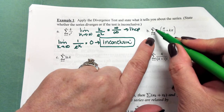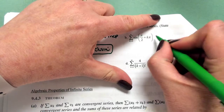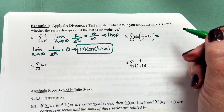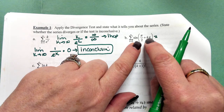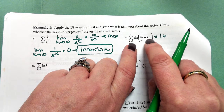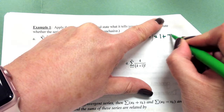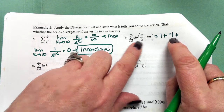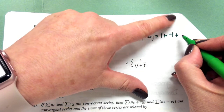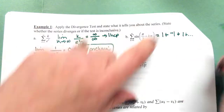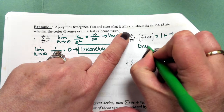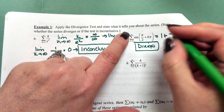For the series of sine(π/2 + kπ) from k=0 to infinity, plugging in k=0 gives sine(π/2) = 1. Plugging in k=1 gives sine(3π/2) = −1. Plugging in k=2 gives sine(5π/2) = 1. Notice what's happening — this is an oscillation, going back and forth between −1 and 1. So this is going to diverge; it's an oscillation.